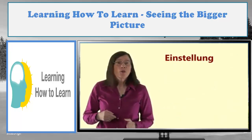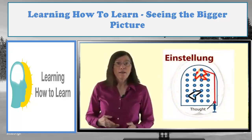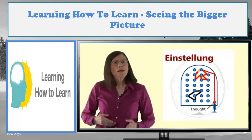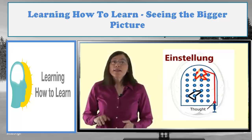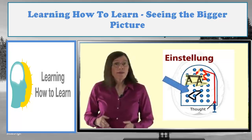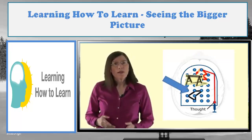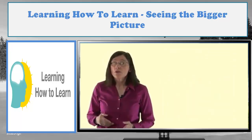Einstellung is when your initial thought — an idea you've already had in mind, or a neural pattern you've already developed well and strengthened — prevents a better idea or solution from being found, or keeps you from being flexible enough to accept new, better, or more appropriate solutions.